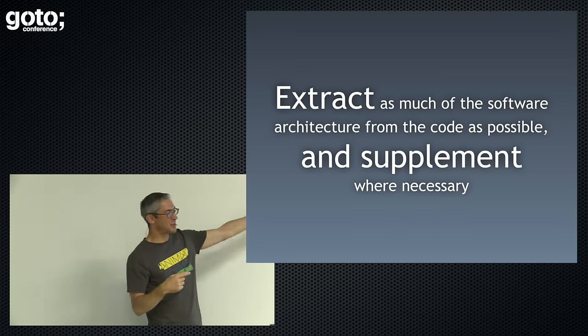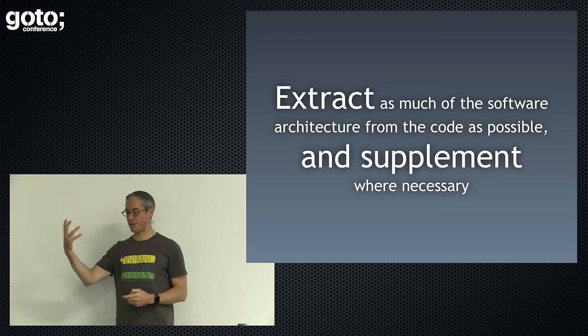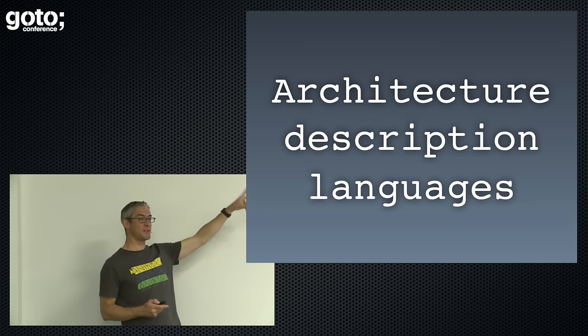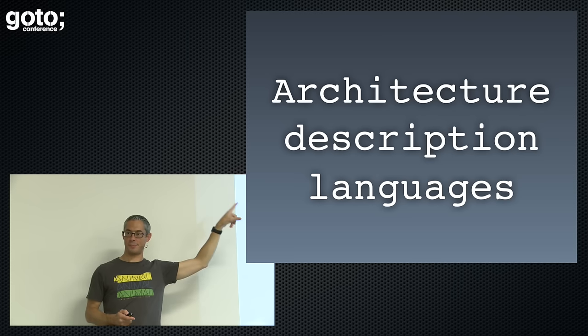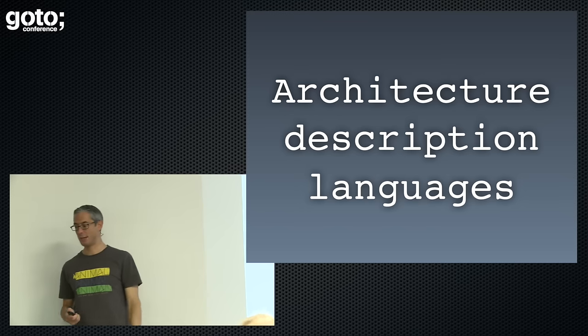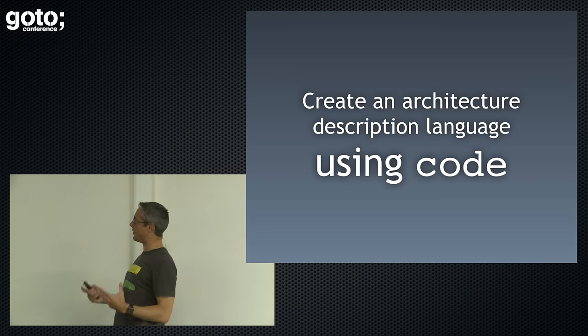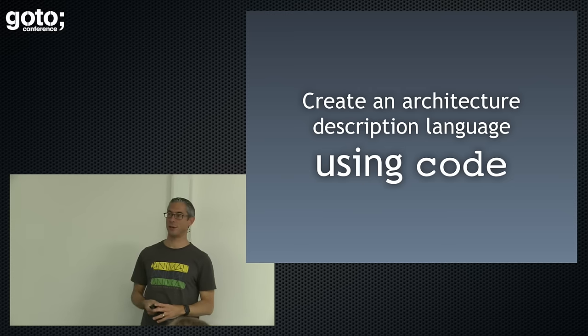By using this, we can extract really useful information from a code base and supplement it where that information is not possible. I want to move away from drawing diagrams in Visio. There's something called an architecture description language — no one's ever really used it because it never entered mainstream industry. It's essentially a textual description of the static structure of a software system. There are a bunch out there — Darwin or Koala, for example — but the syntaxes are horrible. You have to teach developers another weird language just to describe the software they're building. But this is a fantastic concept because we're dealing with text, not pictures. As developers, we like text — we can diff text, we have tooling to support it.